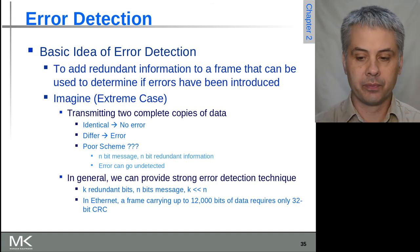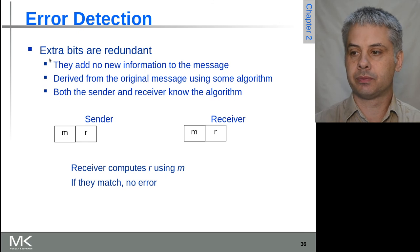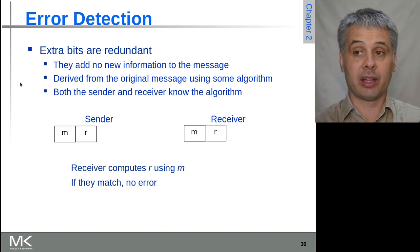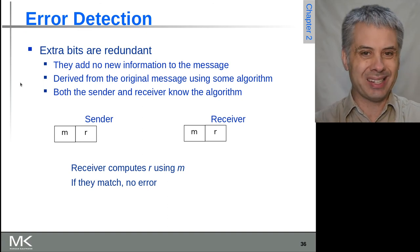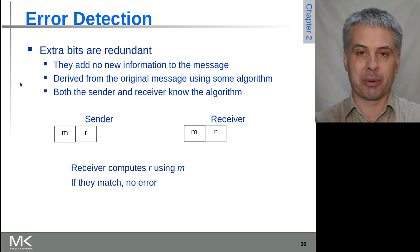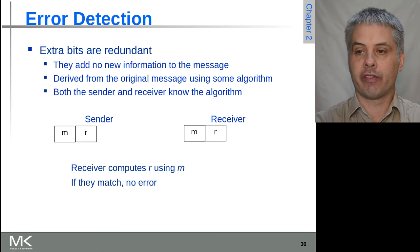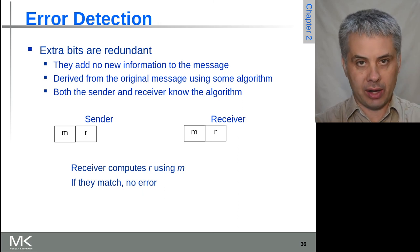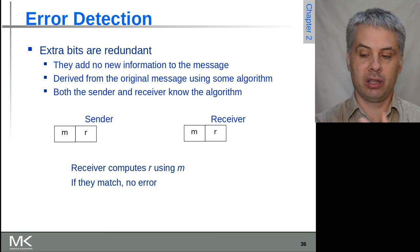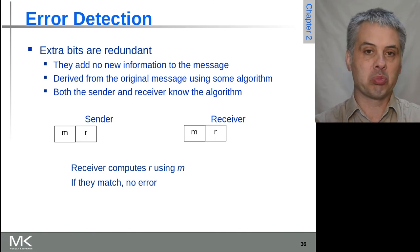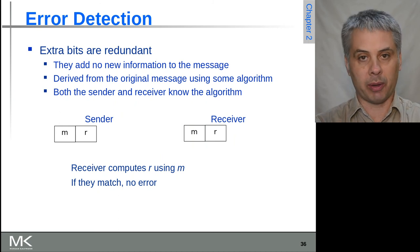The extra bits are redundant in the sense that they don't add new information to the message—they're actually metadata that is there to protect the data in transit. If both the sender and receiver know the algorithm for working out these additional bits and they add up correctly, then it's accepted. If they don't match what's expected, it's assumed an error has occurred.